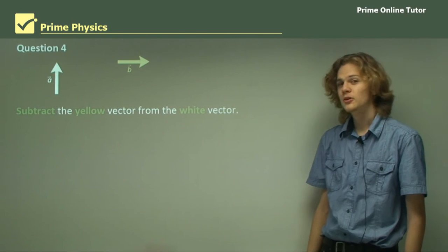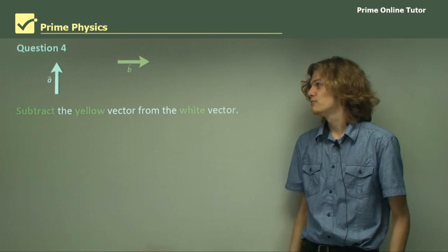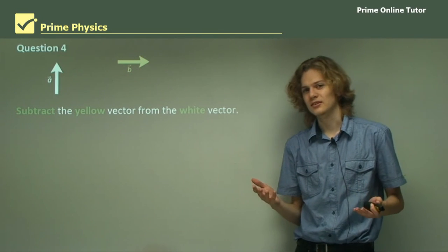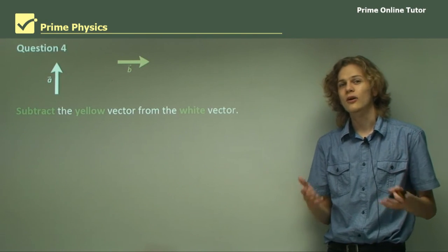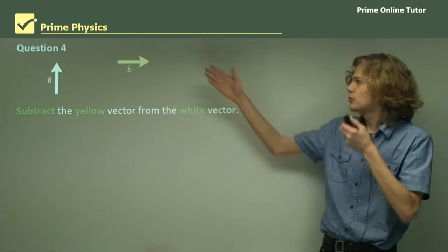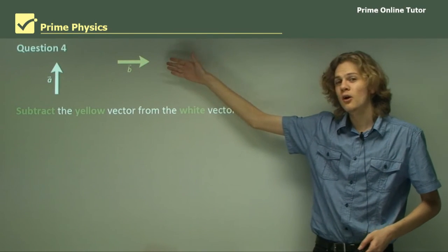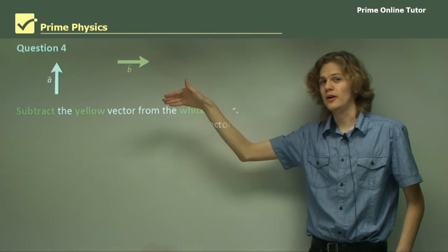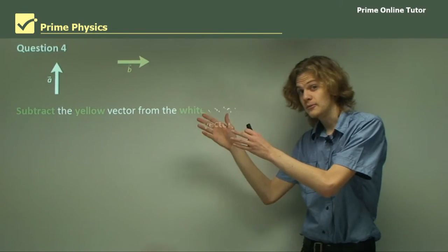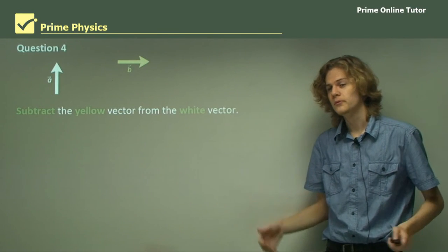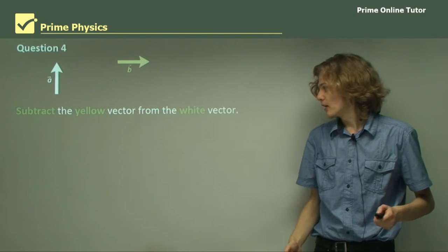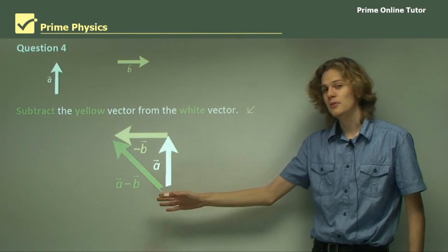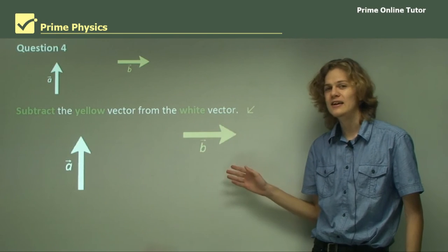Question 4: Subtract the yellow vector from the white vector — that is, find A minus B. When we're subtracting something, we must first reverse it, or find the negative. So if we're subtracting the yellow vector, the first thing we do is find minus B. Minus B has the same length as B but points in the opposite direction — rather than pointing to the right, it'll point to the left. After that, we can just add them together as before. We have B, make it minus B, then add it to A. A minus B is the resultant vector from adding A to minus B.